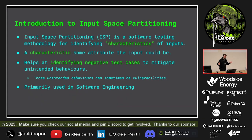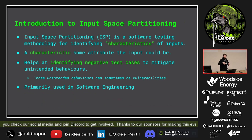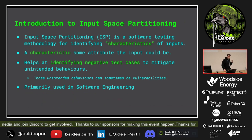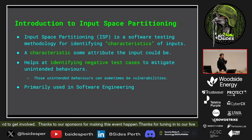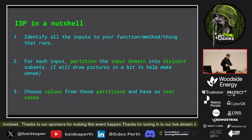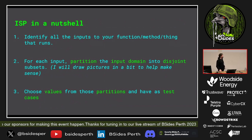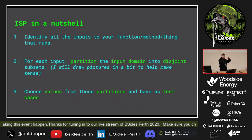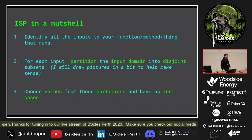If you've seen one of my previous talks, I've rambled on about this methodology called input space partitioning. Basically it's a process for identifying what's called a characteristic of an input — you can think of a characteristic as some attribute of an input which could manipulate behavior. The really important thing about this methodology is it helps you identify test cases, or more specifically negative test cases, which a lot of software engineers and testers miss out on. What you do is pick whatever function or method you're testing, identify all the inputs, then keep partitioning that input domain into smaller partitions that make sense with the intended behavior, and then choose values for each partition to generate your test cases.